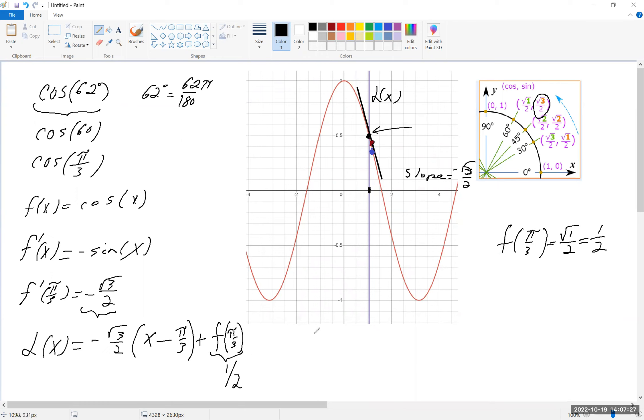All right, so our function then is minus root 3 over 2. And I think I'm just going to leave this. I could simplify it and distribute, but I think we're going to just leave it this way.